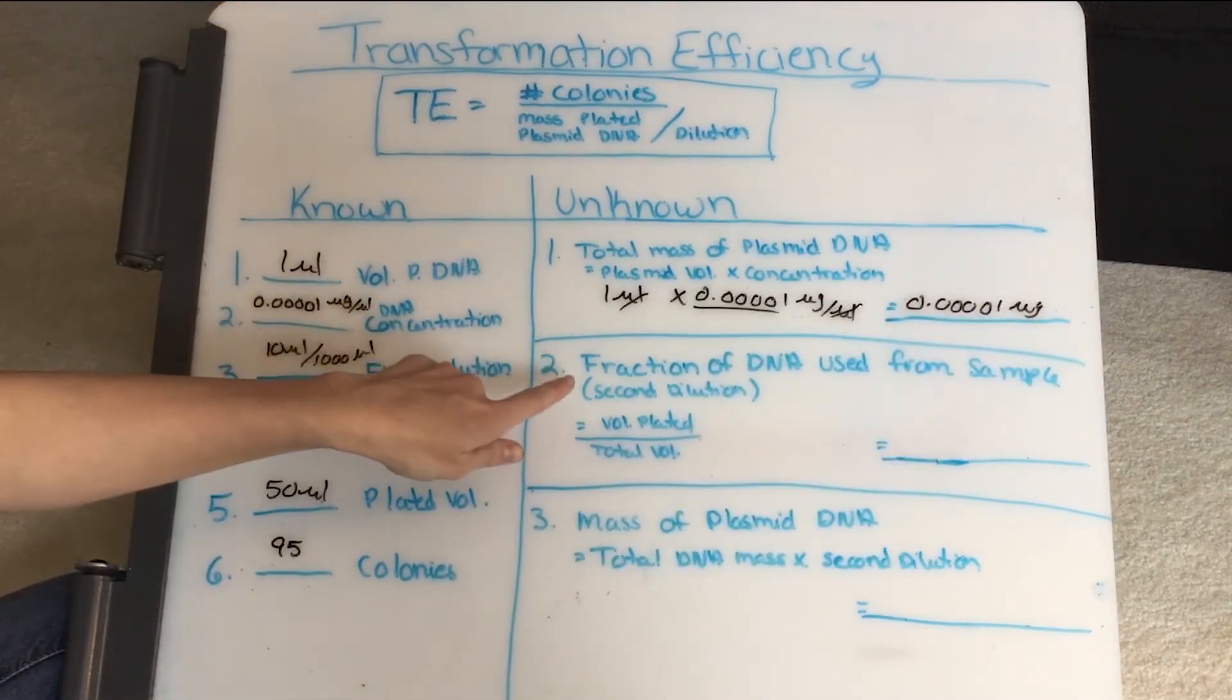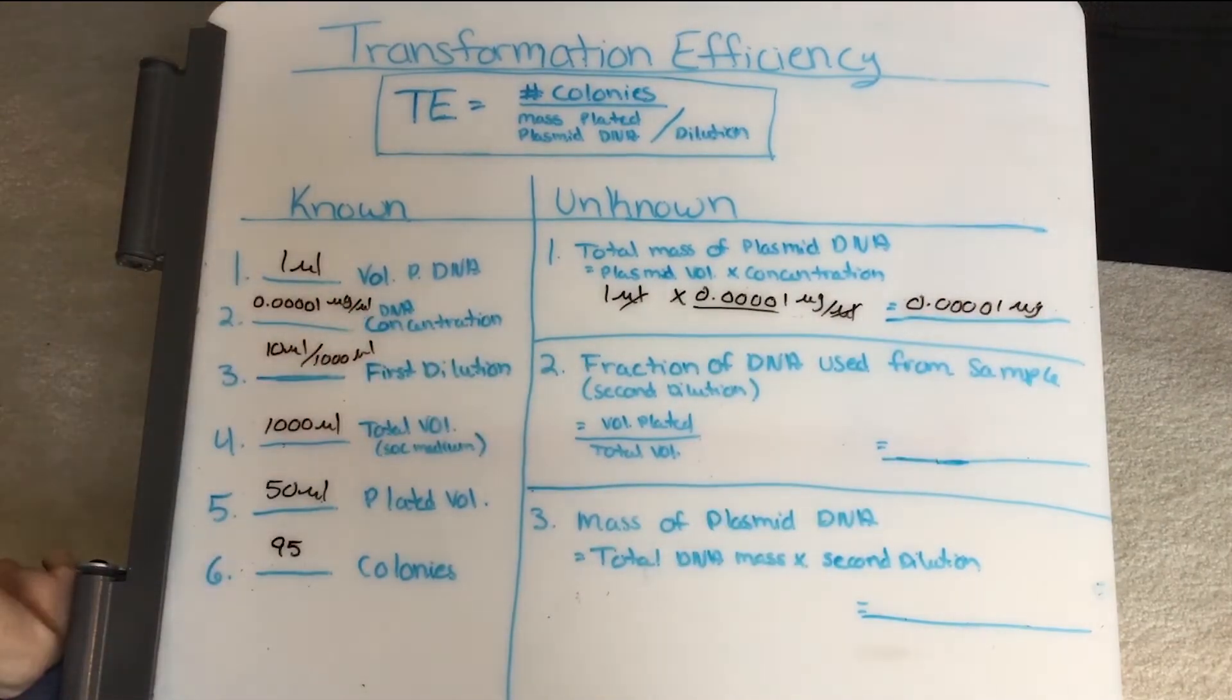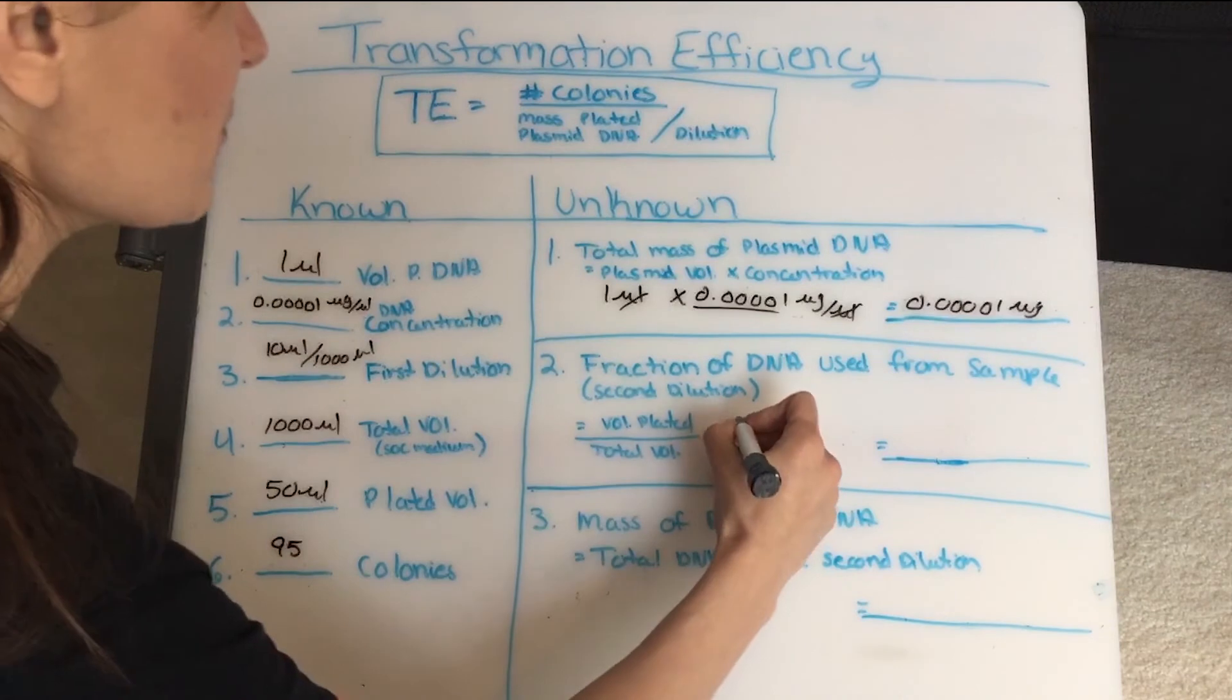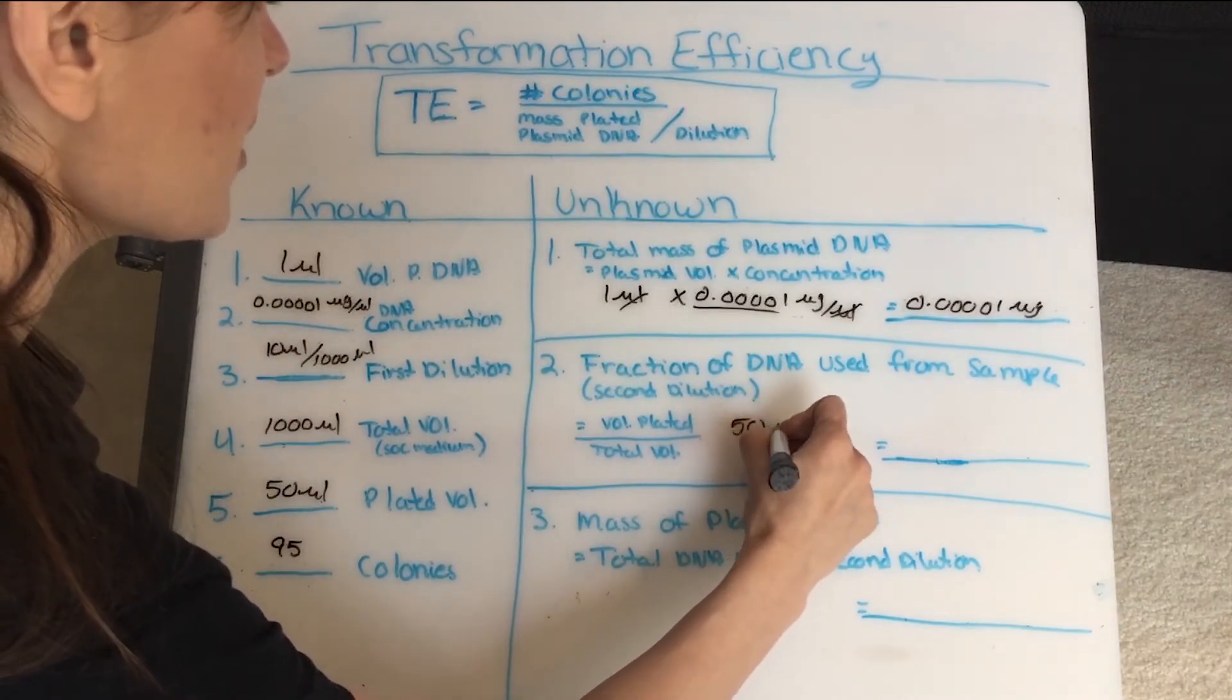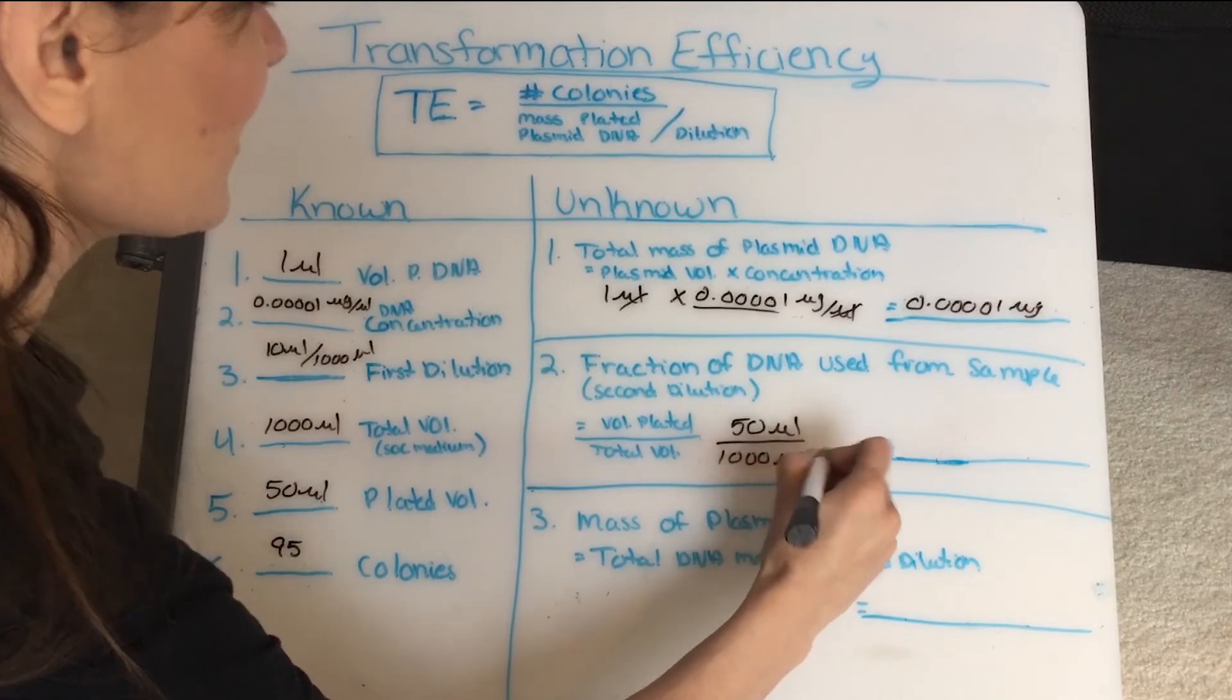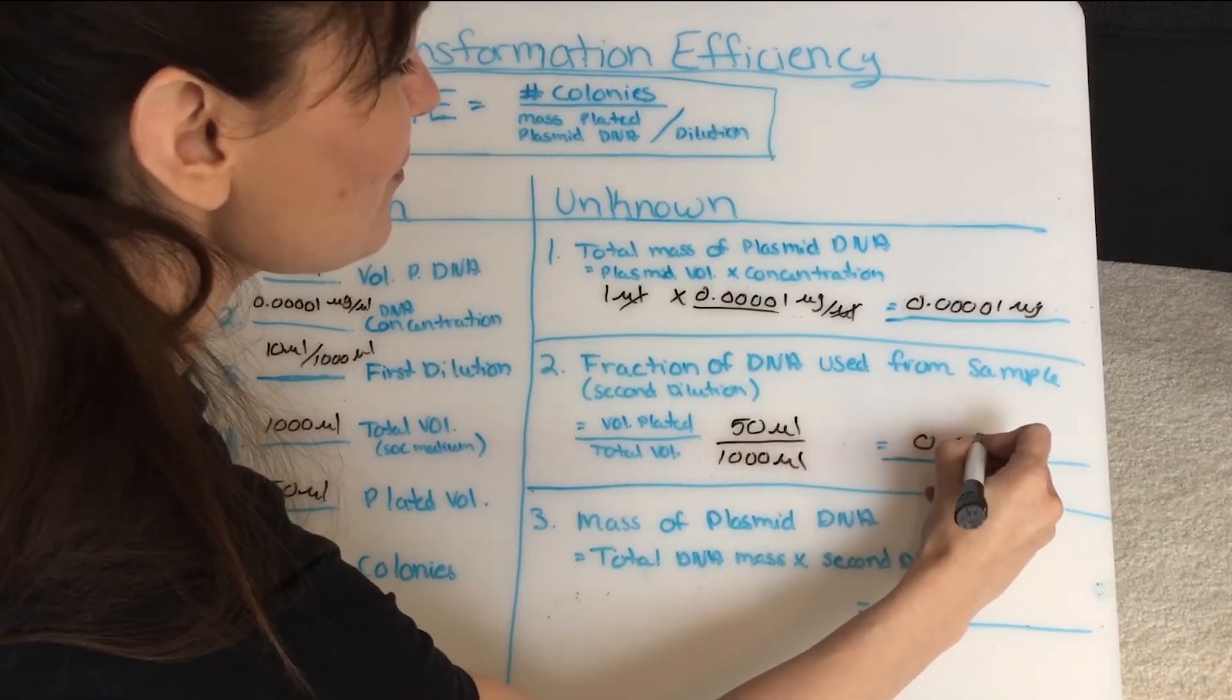The next thing I'm going to do is look at the fraction of DNA used from sample, and what I'm doing is I'm looking at the amount plated over my total volume. It's as easy as that. So 50 microliters over 1000 microliters, and that's 0.05.